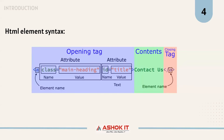Inside the opening tag, you can also add some attributes. Examples of attributes are class, id, and style. An attribute is divided into two parts: the attribute name and attribute value. Remember, we always write the value inside quotes — whether single quote or double quote, both will work.